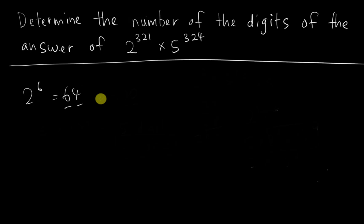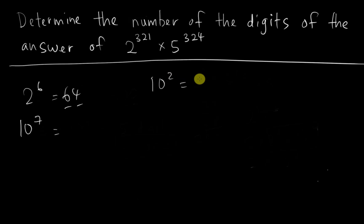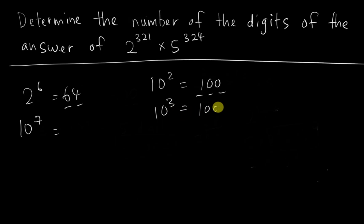But if we work in terms of base 10, it becomes very easy. For example, 10 to the power of 7 has 7 digits, and 10 to the power of 8 has 8 digits. Actually, 10 to the power of 2 is 100, which has 3 digits, and 10 to the power of 3 is 1000, which has 4 digits — that means 3 zeros, giving you 8 digits for 10 to the power of 7.